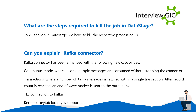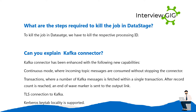What are the steps required to kill a job in DataStage? To kill a job in DataStage, we have to kill the respective processing ID. Can you explain Kafka Connector? Kafka Connector has been enhanced with the following new capabilities: